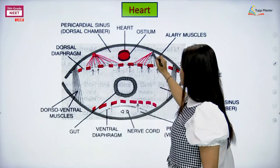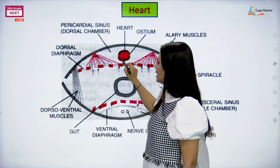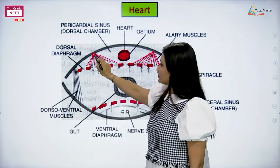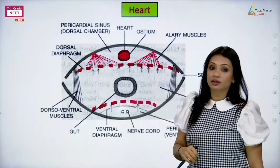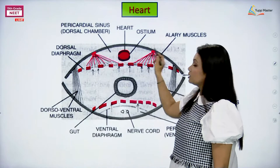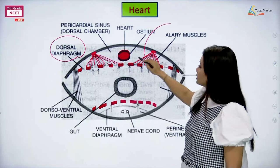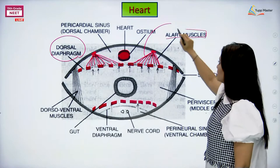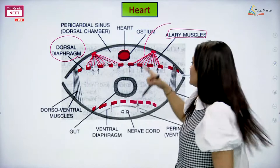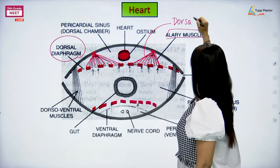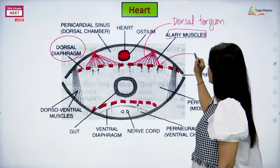These triangular-shaped structures are present. You can see how those structures are connected at one end with the heart, and the top and bottom parts are connected - one part is connected to the dorsal tergum and the attachment of the other end of the muscle is at the dorsal diaphragm. These muscles which are near the heart are called alary muscles. They start at the dorsal tergum and are inserted at the level of the dorsal diaphragm.